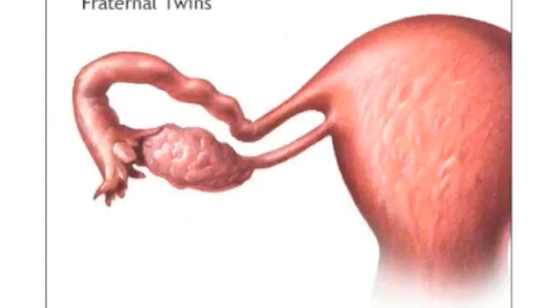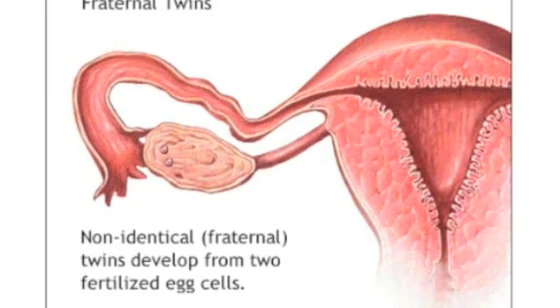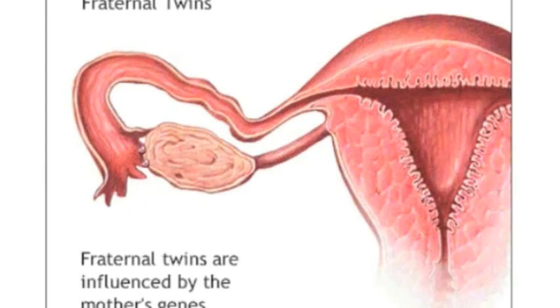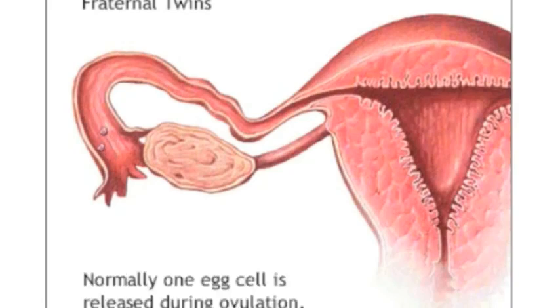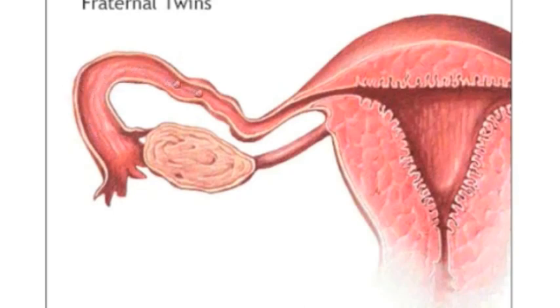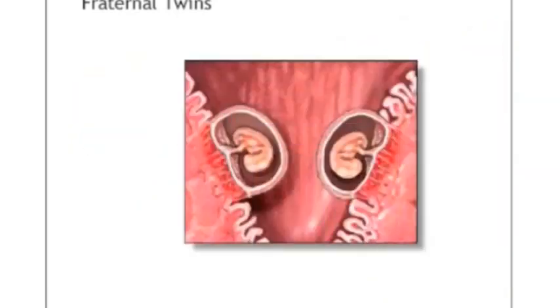Now let's come to the fraternal twins or non-identical twins. The ovary releases two egg cells instead of one, which come to the fallopian tube. These two egg cells in fraternal twins are highly influenced by the mother's genes. After coming to the fallopian tube, these two egg cells are fertilized by sperm cells, and after fertilization, implantation occurs at the wall of the uterus. Definitely they will share different chorion, different amnion, and different placenta. That is how twins are made.